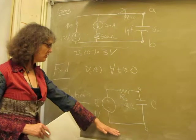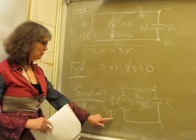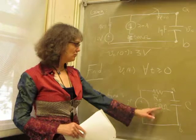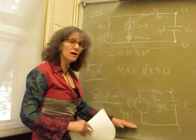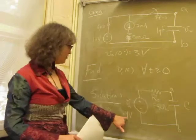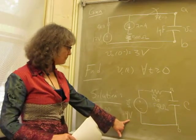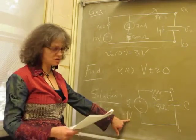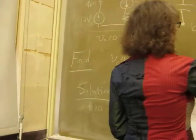Now that we've got the Thevenin equivalent where the voltage source is 4 volts and the resistance is 4 kilo-ohms, we can apply the solution. The solution is going to be the simpler solution for the constant source, and that looks like this.